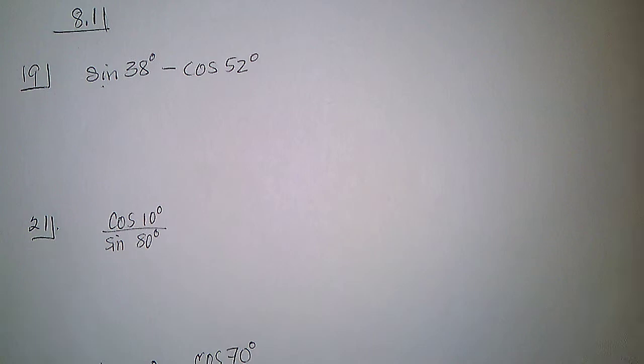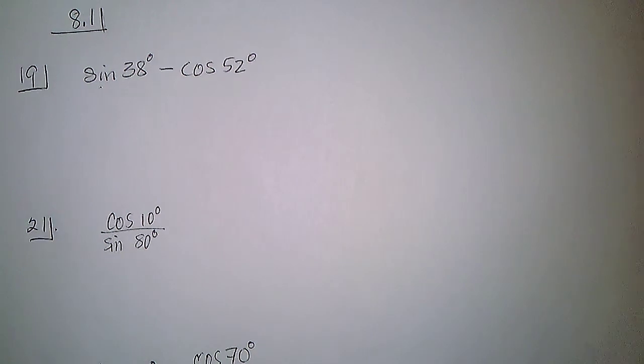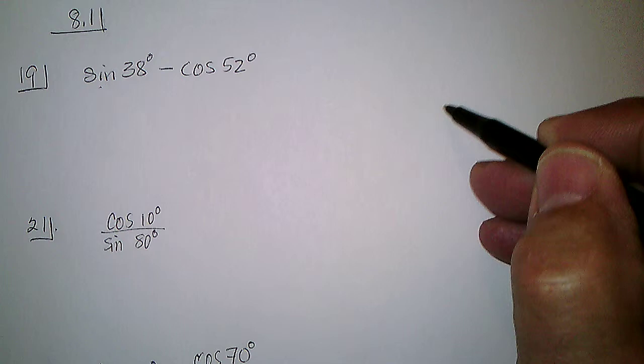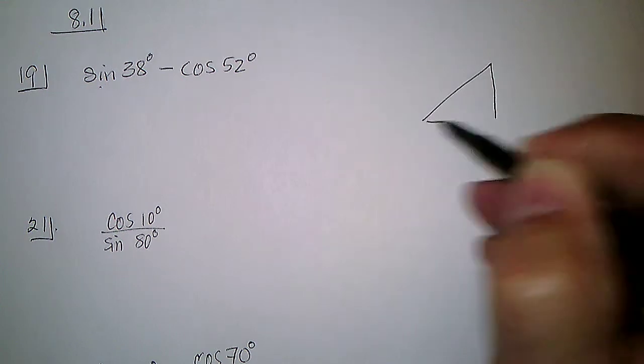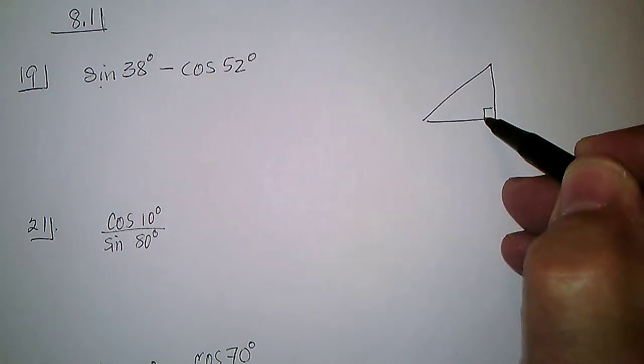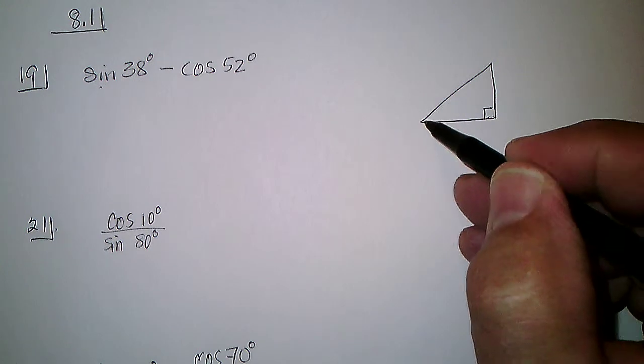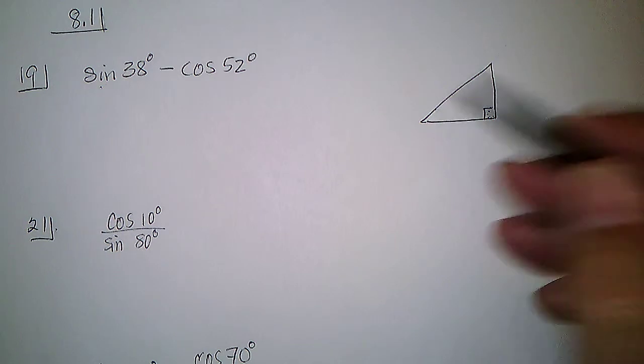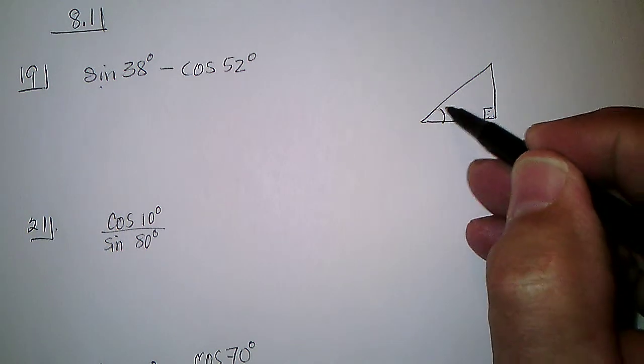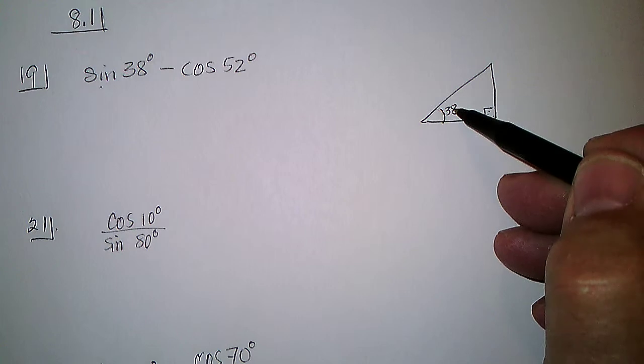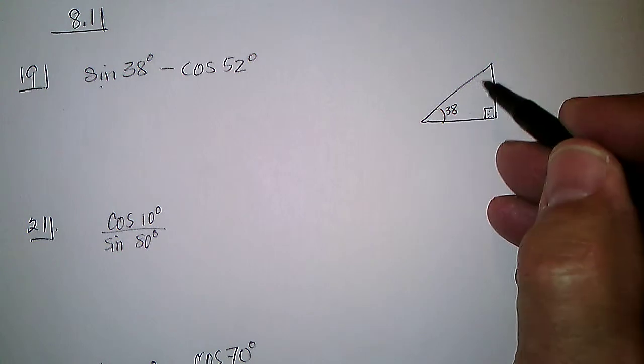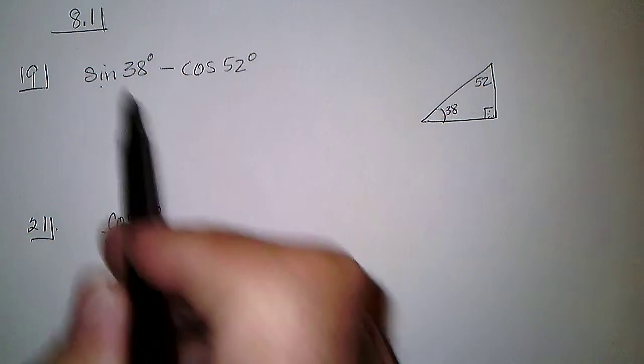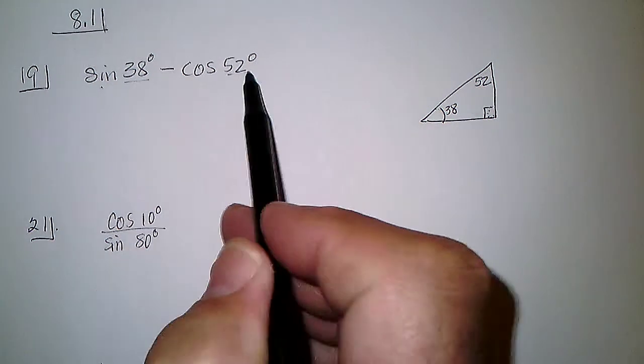There's a few questions on 8.1, and the first three, 19, 21, and 25, all have to deal with the relationship on a right triangle, where if there is a right triangle, then that's 90 of the 180 degrees, so the other two make 90. So if one of them happened to be 38, 38 from 90 leaves the other one being 52, which happens to be the two angles here.